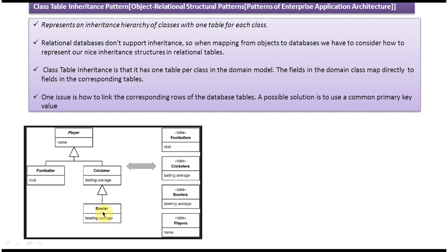If you want to store Bowler information, you have to store it in the Player table, the Cricketer table, and the Bowler table. To retrieve Bowler information, you must consult three tables — Bowler, Cricketer, and Player — and use joins to get the data.